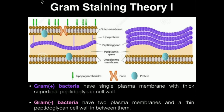Before we go into the theory of the gram stain specifically, we need to understand structurally the main differences between gram-positive and gram-negative bacteria. Gram-positive bacteria are shown here on the right in this image. The main two things about gram-positive bacteria you should know is that they have a very thick outer layer of peptidoglycan outside of their single plasma membrane.